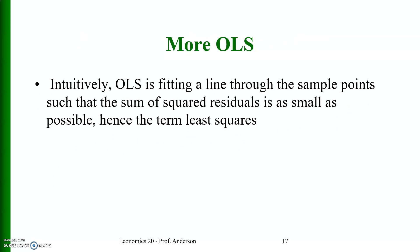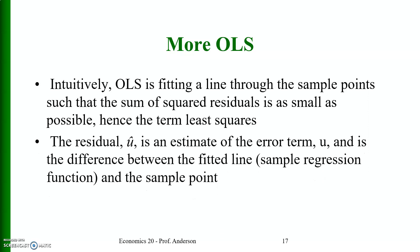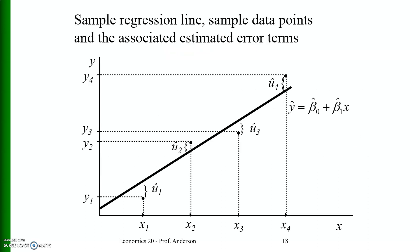OLS fits a line through the sample points such that the sum of squared residuals is as small as possible — hence the term 'least squares.' The residual u_hat is an estimate of the error term u, and is the difference between the fitted line (sample regression function) and the sample point. The figure displays the sample regression line, sample data points, and associated estimated errors u1_hat, u2_hat, u3_hat, and u4_hat, with x values on the horizontal axis.